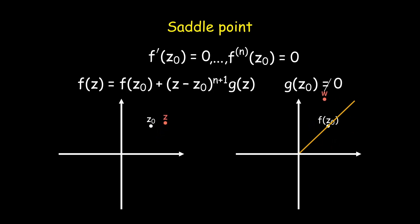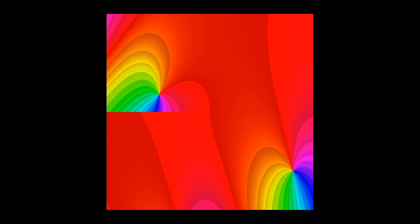The point w meets the line with the argument of f(z₀) exactly 2n + 2 times. Therefore, in the phase portrait, 2n + 2 lines of the same color meet at z₀. In this example, we observe a saddle point of order 2.